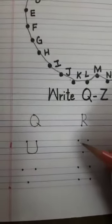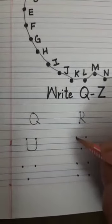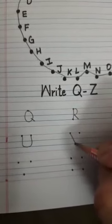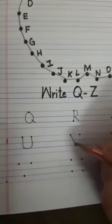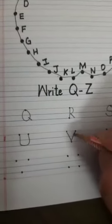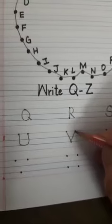Then after U, V. Join this dot to this dot. One slanting line. Up to down. Then from here. Down to up. This is alphabet V.